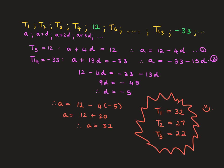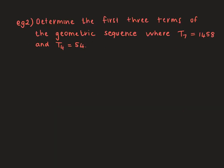Let's look at another example. Determine the first three terms of the geometric sequence where term 7 is 1458 and term 4 is 54.